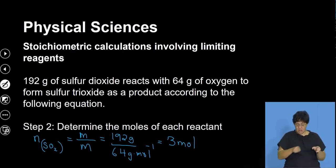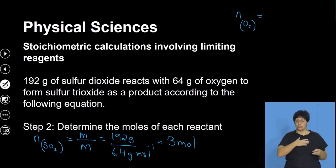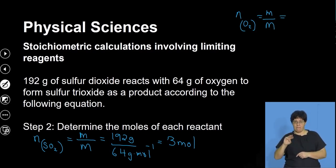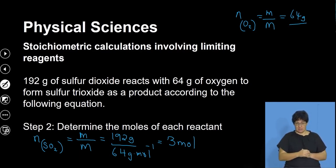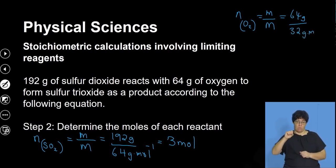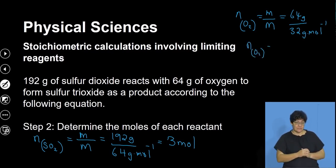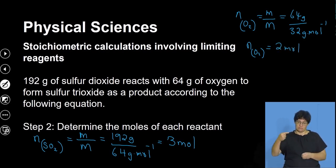Now for oxygen: number of moles of oxygen gas equals mass over molar mass. The mass of oxygen is 64 grams. Oxygen is a diatomic molecule, so each atom is 16 multiplied by 2, giving 32 grams per mole. So the moles of oxygen in this sample is 64 divided by 32, which equals 2 moles.